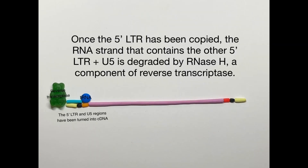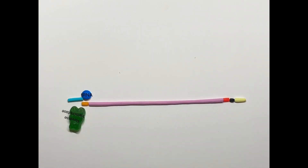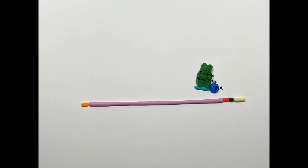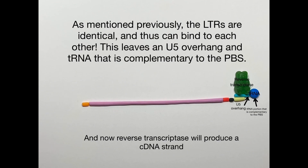Here we see the RNA-based DNA polymerase activity. Reverse transcriptase copies the 5' LTR and the U5 region into cDNA. It then degrades the RNA 5' LTR and U5 region via its RNase H component. Since both the 5' LTR and 3' LTR are identical, they can complementarily bind to each other — which is what the cDNA's 5' LTR does when it binds to the RNA's 3' LTR. This leaves a U5 overhang at the 5' end of the cDNA, and the tRNA remains complementary to the PBS site.